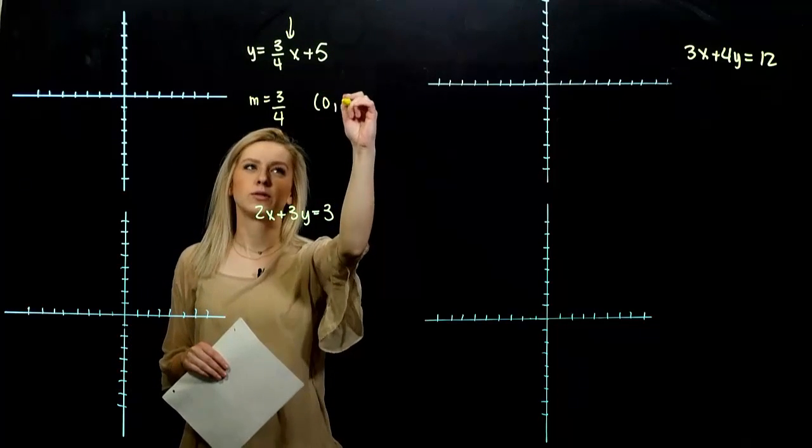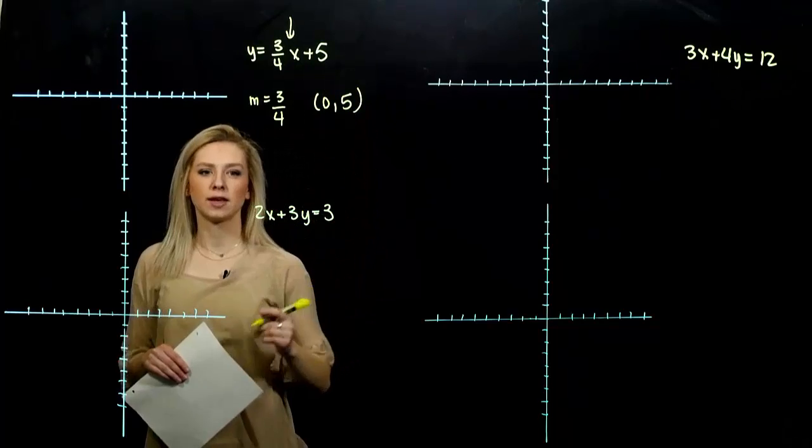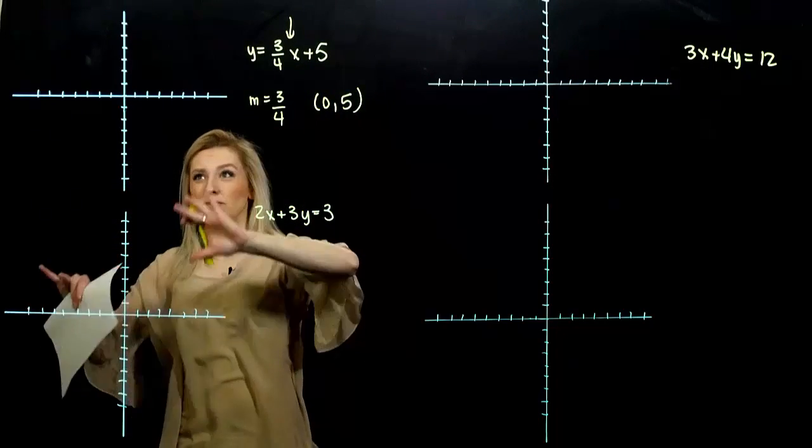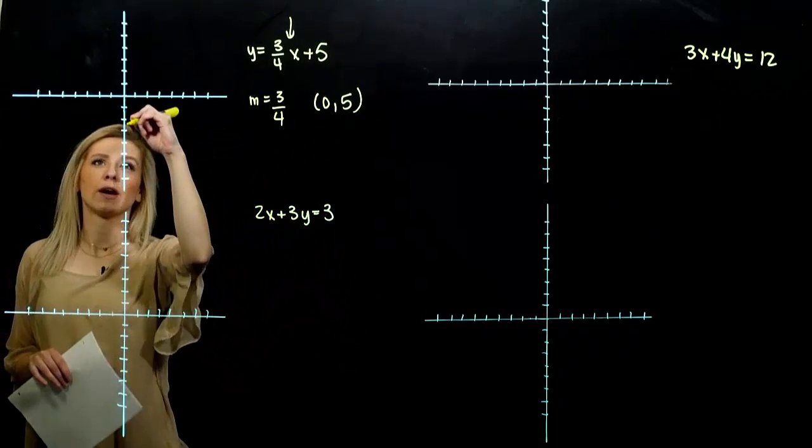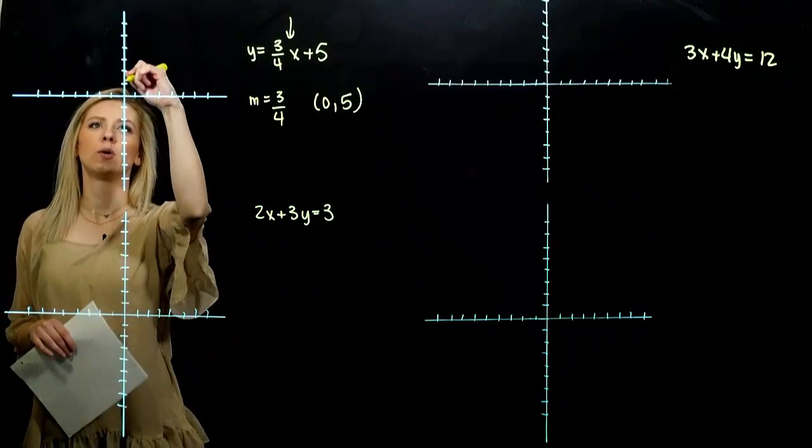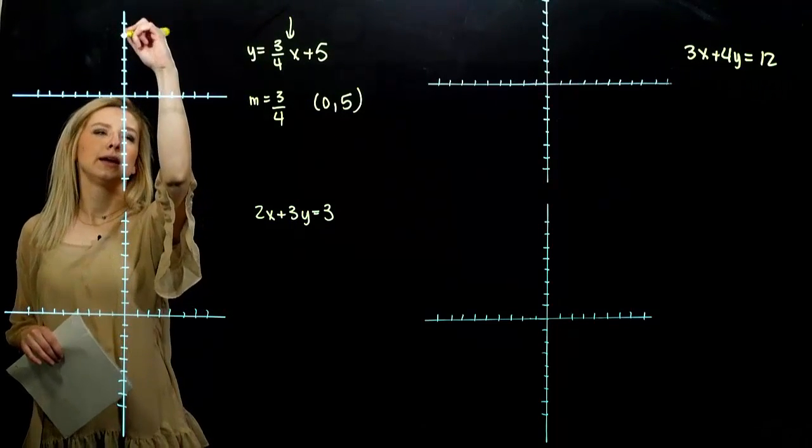What is my slope in this case? Three-fourths, the value, the coefficient on the front of x. And my y-intercept is going through the point zero, five, the constant on the end. So we can get that information like we've had before and graph it just the same. Zero, one, two, three, four, five.